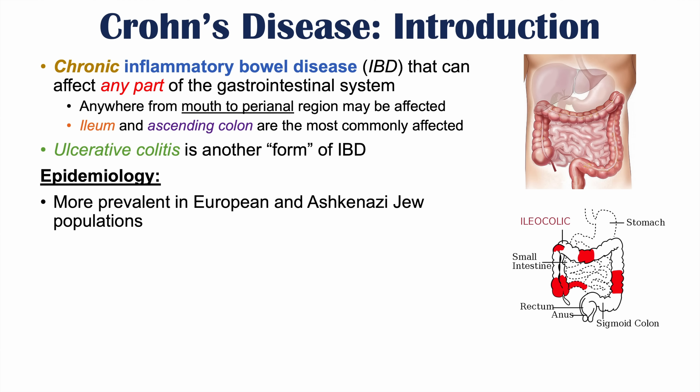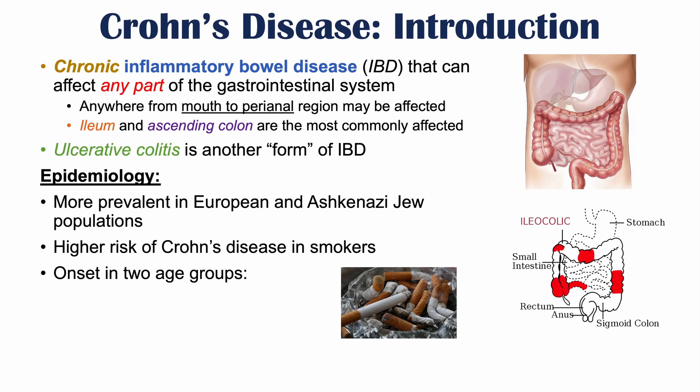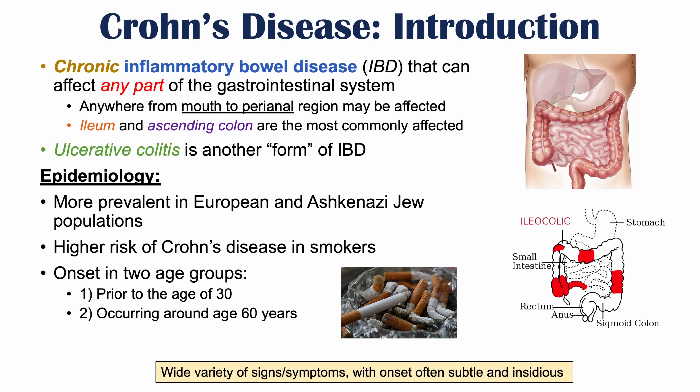What is the epidemiology of Crohn's disease? Crohn's disease is more prevalent in European and Ashkenazi Jewish populations, and there is a higher risk in smokers. Interestingly, smoking actually decreases the risk of ulcerative colitis — a key difference between the two conditions. There is an onset in two particular age groups: prior to age 30, and another smaller increase around age 60. The signs and symptoms often have a subtle and insidious onset, developing slowly over longer periods of time.